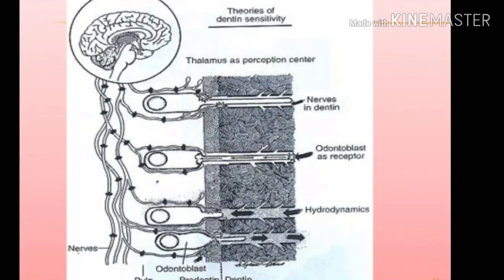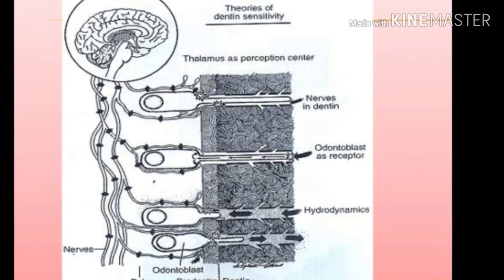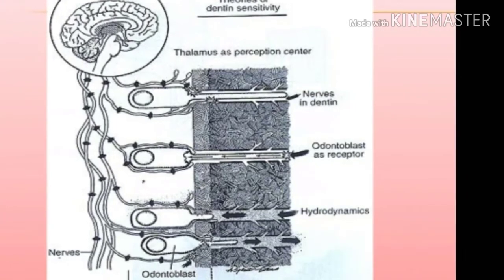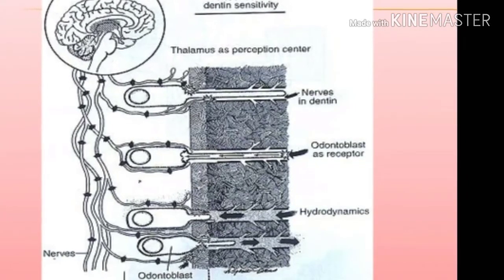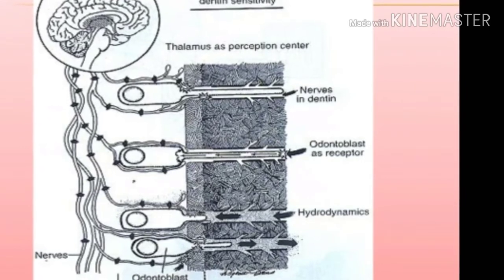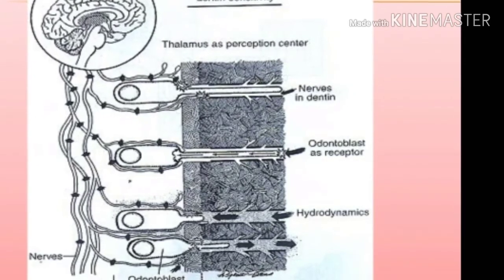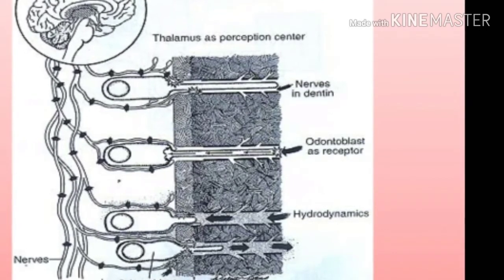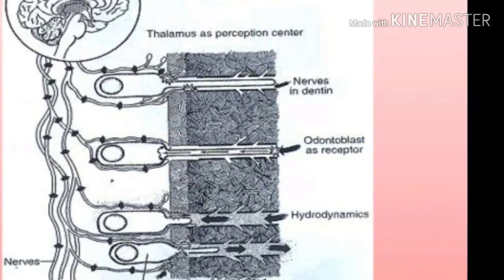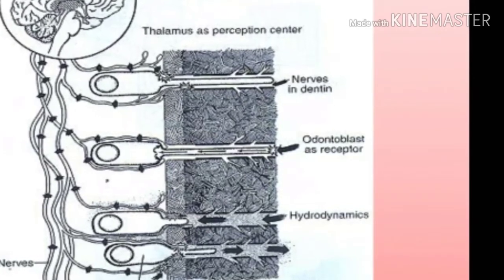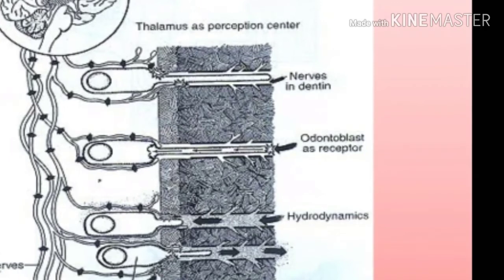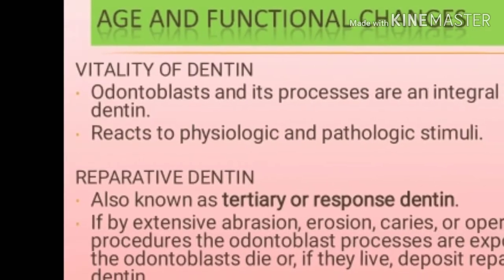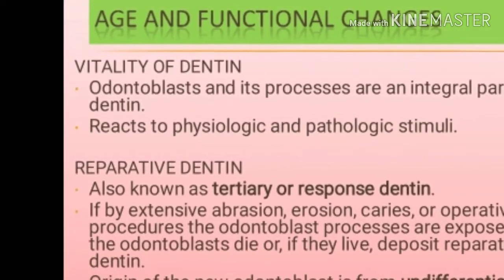The odontoblast at the top of the figure explains the direct conduction theory, in which the stimuli directly affect the nerve endings in the tubules. The second odontoblast shows the transduction theory, in which the membrane of the odontoblast processes conducts an impulse to the nerve endings in the pre-dentine, odontoblast zone, and the pulp. The odontoblast at the bottom explains the hydrodynamic theory, in which the stimuli cause an inward or outward movement of fluid in the tubule, which in turn produces movement of the odontoblast and its processes.